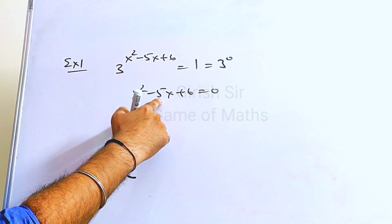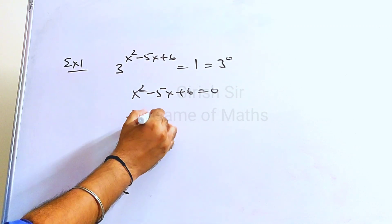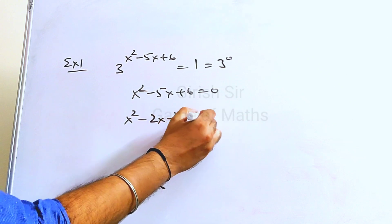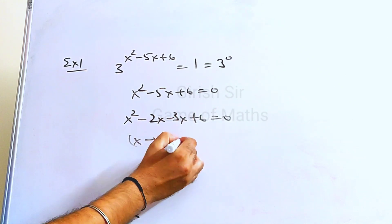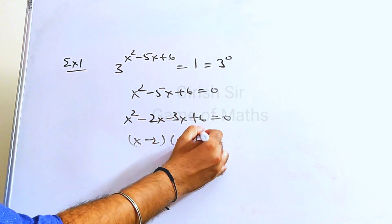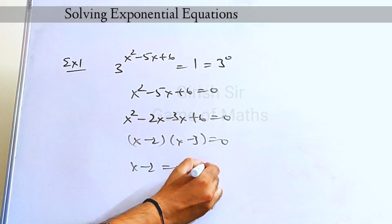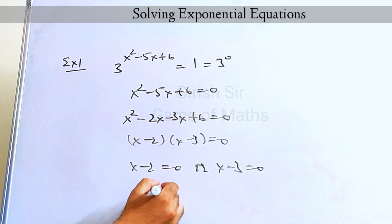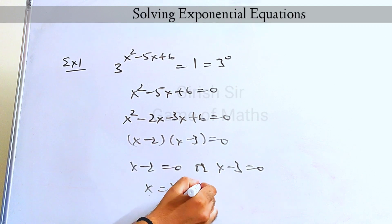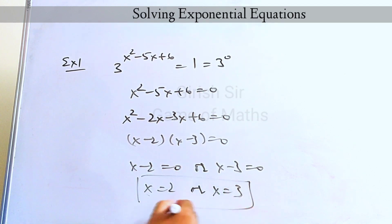Now I will split the middle term of the quadratic. This implies x equal to 0 or x equal to 3 are two possible solutions.